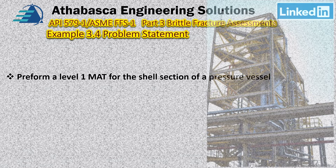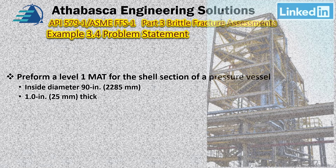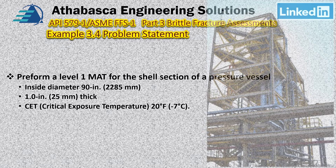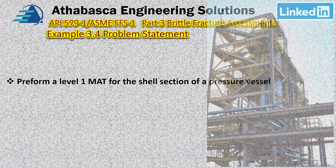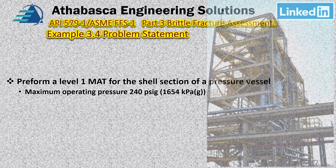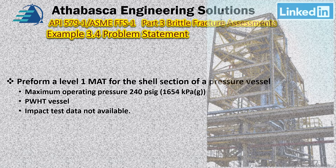What else can we find out? The inside diameter is 90 inches, the thickness is 1 inch or 25 millimeters, and the CET is 20 degrees Fahrenheit or minus 7 degrees centigrade. We want to perform a Level 1 MAT assessment. The operating pressure at that particular point on the vessel is 240 PSIG. This is a post-weld heat treated vessel and there is no impact testing data available.